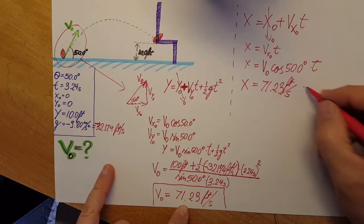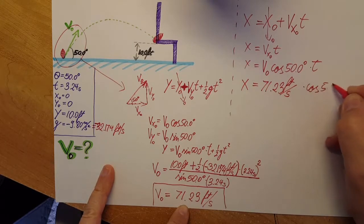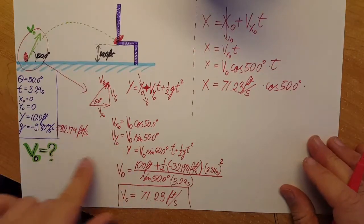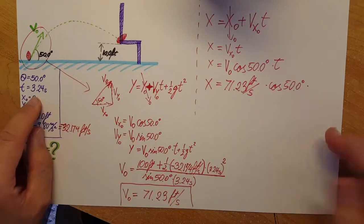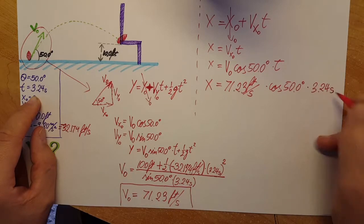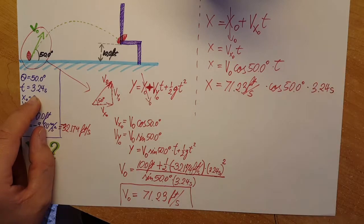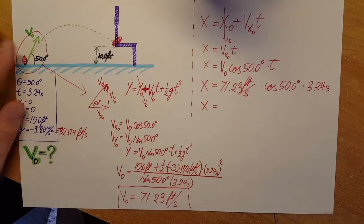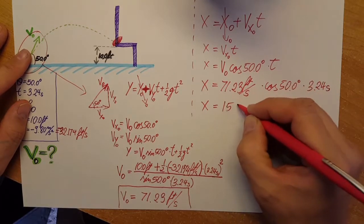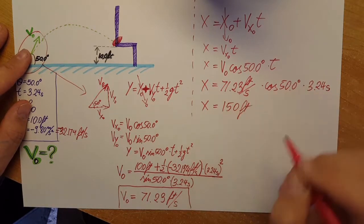Now we can plug these in. V naught we found it, it's right here, 71.23 feet per second times cosine 50 degrees and times the time which we had given, it's right here, 3.24 seconds. And now it's calculator time. We're gonna plug it in and we're gonna find the value which is 150 feet.